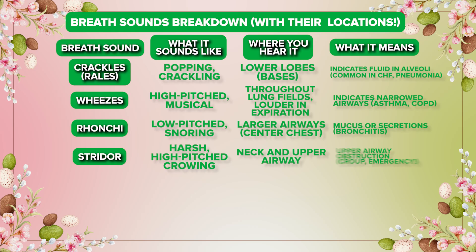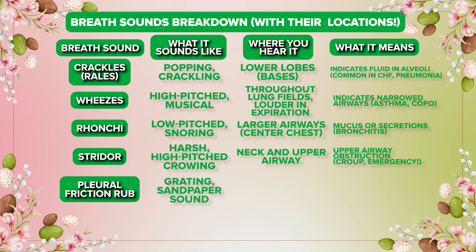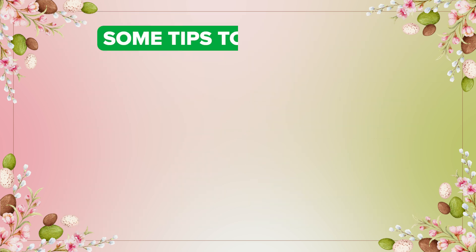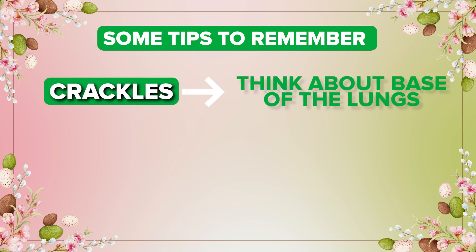Stridor is a harsh, high-pitched crowing sound heard in the neck area and upper airway, indicating an upper airway obstruction. It can be seen in croup and is an emergency. Pleural friction rub is a grating or sandpaper sound typically heard in the lower lungs, indicating inflamed pleura seen in pleuritis. Absent breath sounds indicate silence — actually indicating collapsed lungs, as seen in pneumothorax, or a blockage anywhere in the airway.